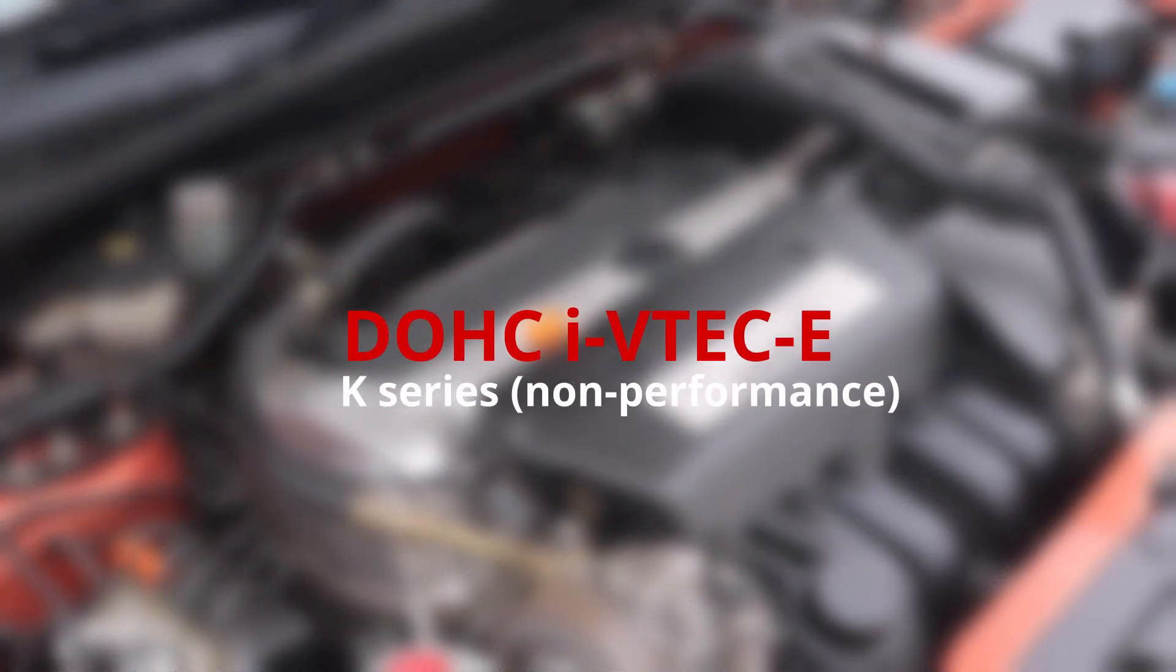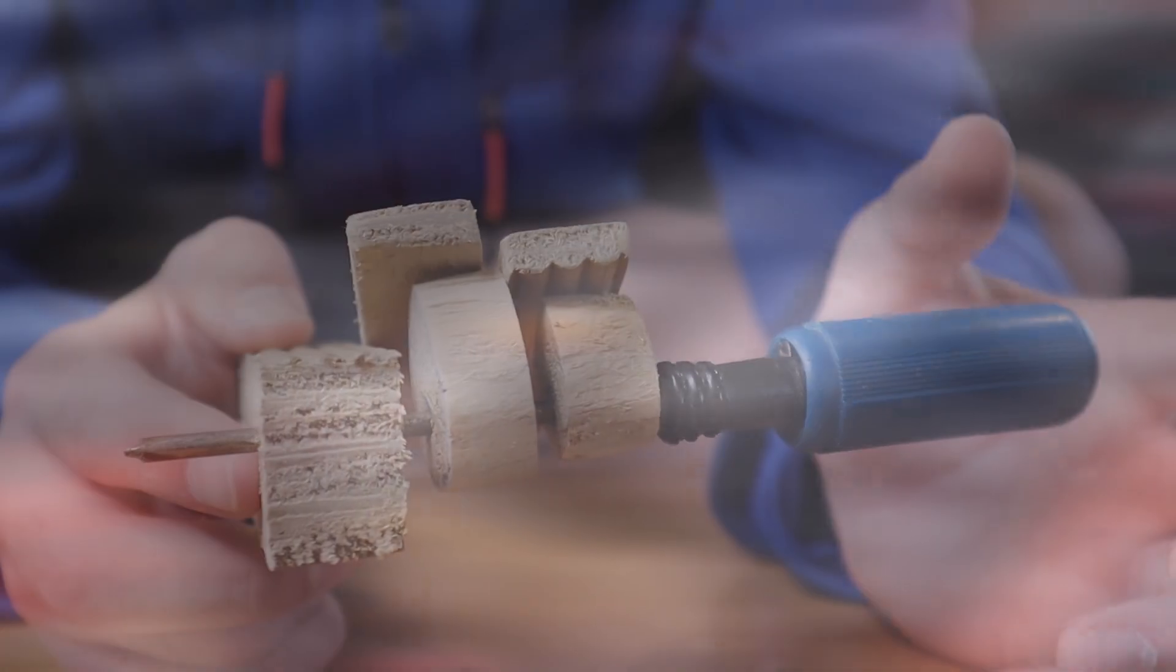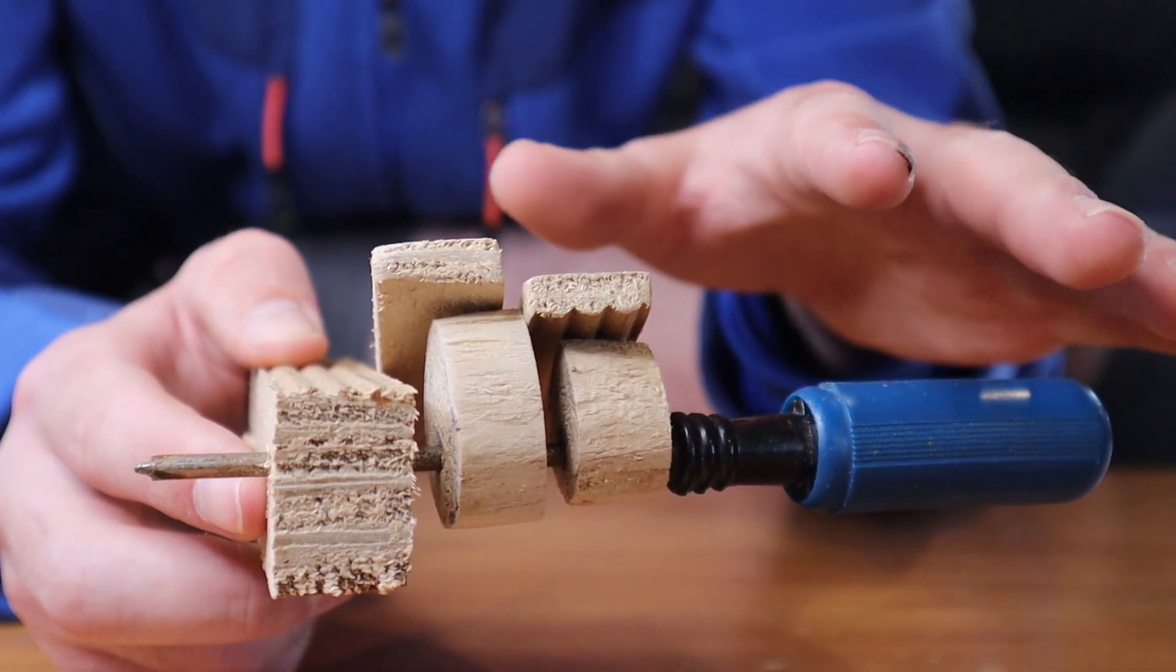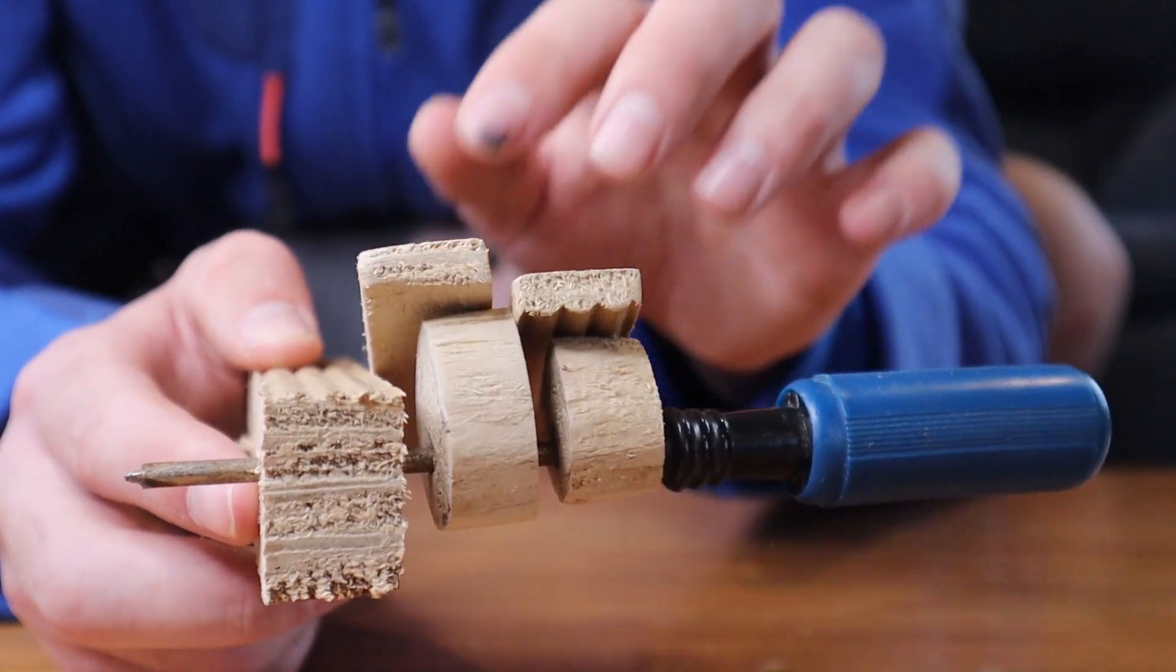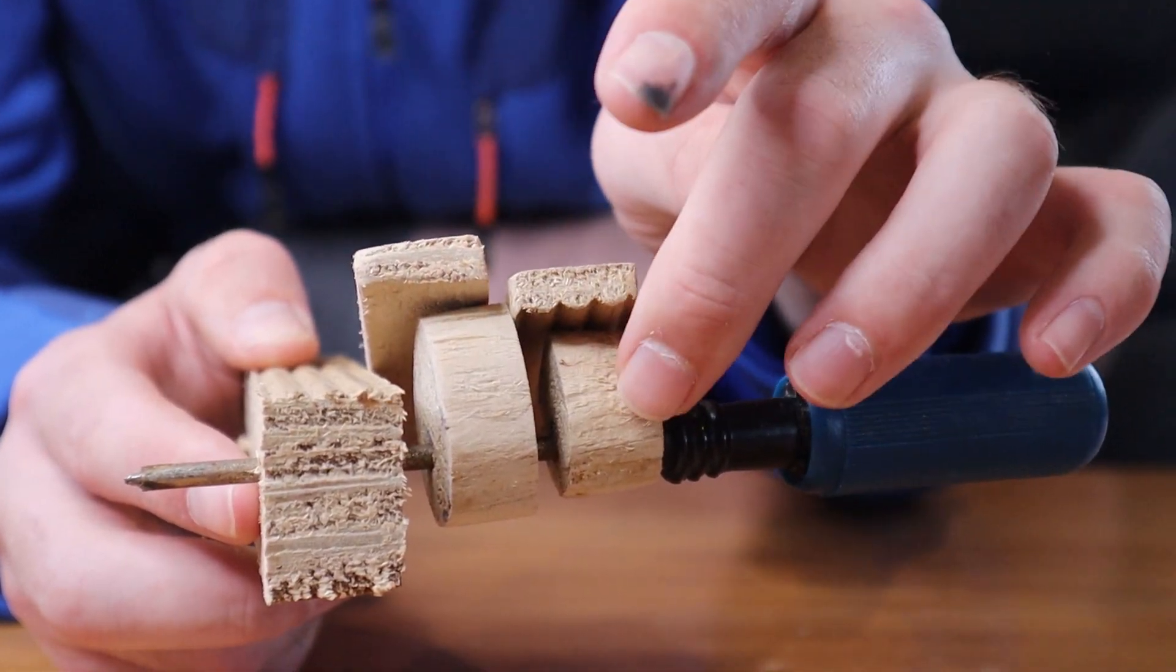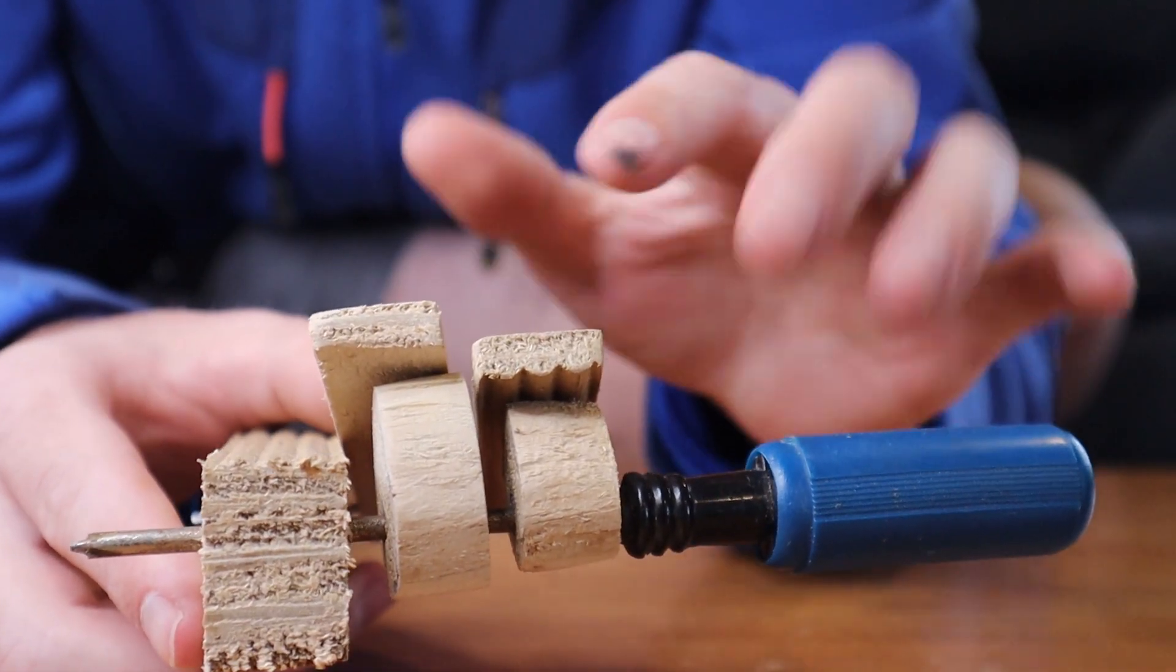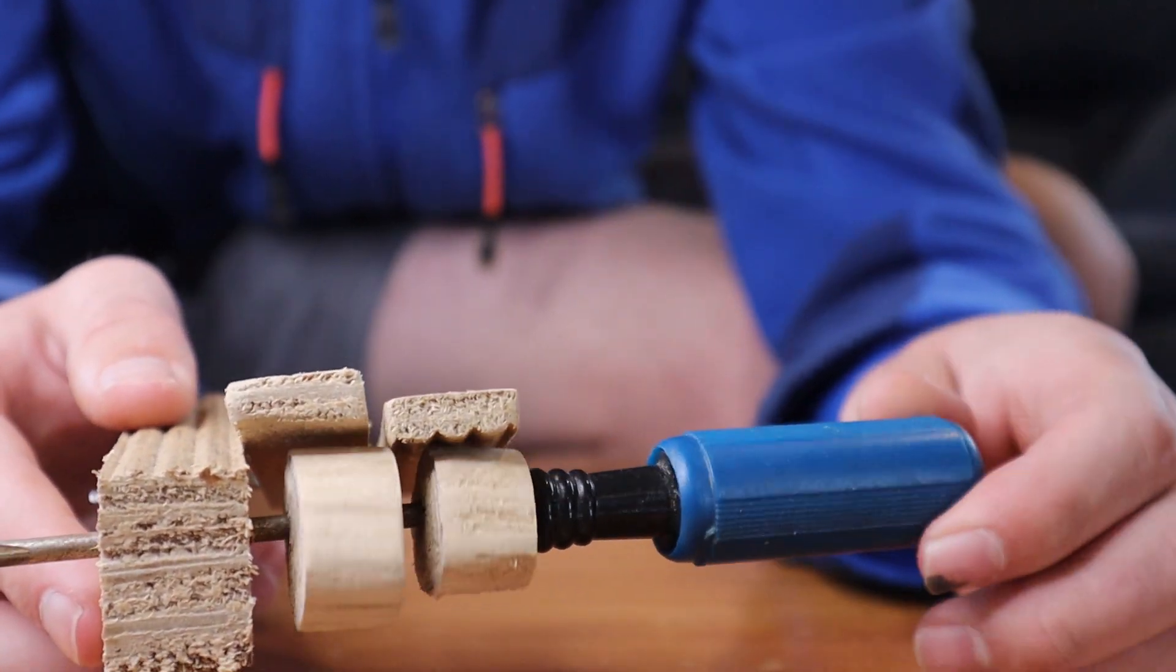Now we'll move into some other less performancey ones. This one here is called DOHC iVTEC-E. The way it works is the exhaust camshaft is just a normal camshaft, there's no VTEC or anything on it, but on the intake you have a big cam and a very very small cam. And the way that works is when you're at low RPM or low load it will run off both cams, but this one here will only be opened a very very tiny amount and this one will be opened a normal amount.